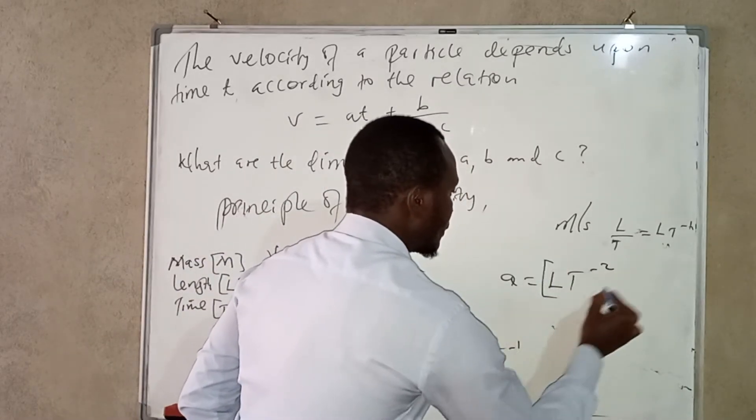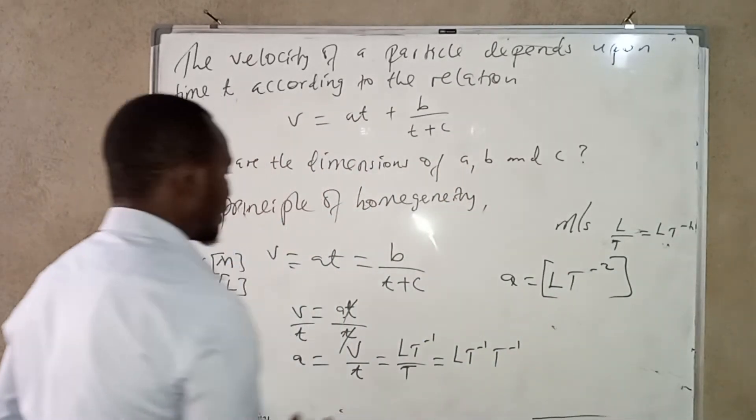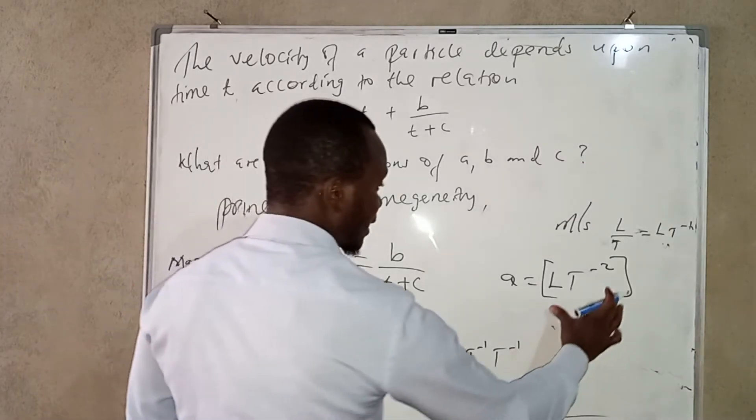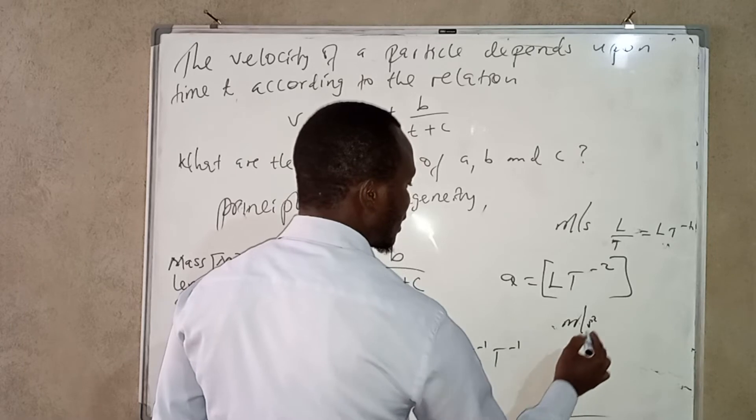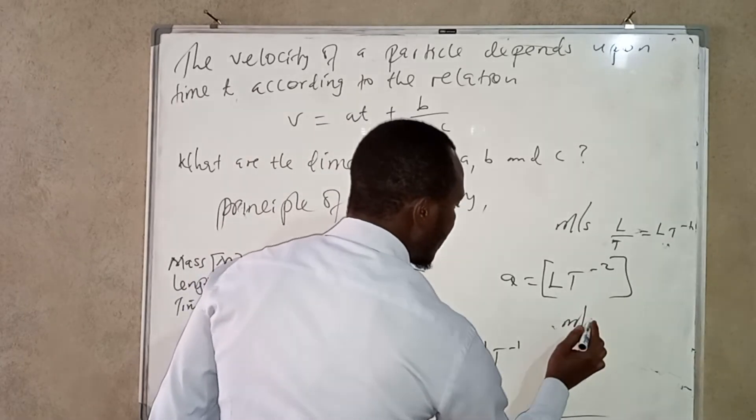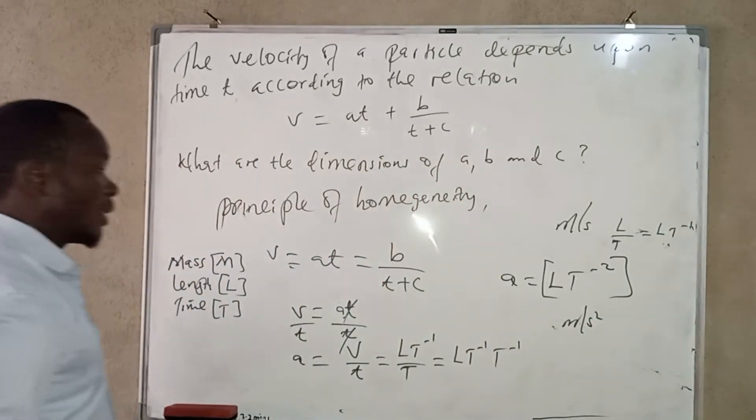So a has the dimensions of acceleration. In terms of units in fact it is the one that gives these units meter per second squared.